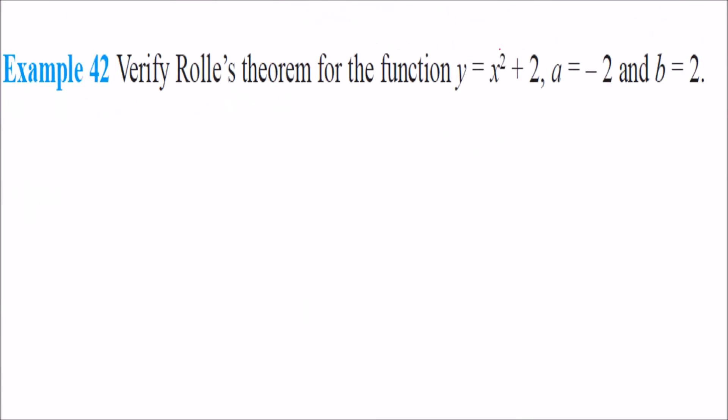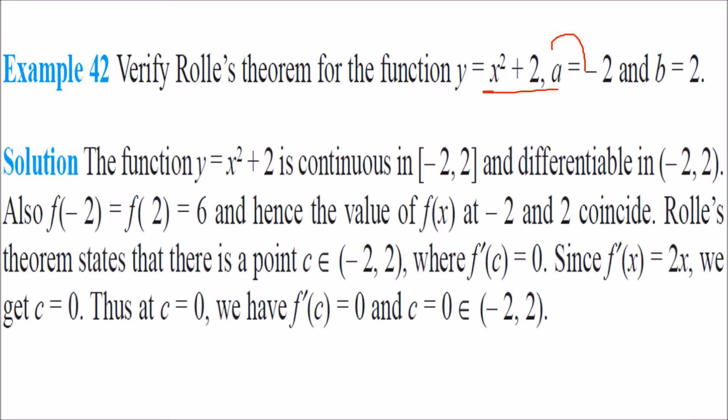Just verify the Rolle's theorem for this function. a is minus 2, b is equal to 2. See, the function is continuous at [-2, 2]. And differentiable also in this region. f(-2) is what? If you place minus 2, minus 2 or 2. In both the cases, you get 6. So since the f(x) or the value at minus 2 and 2, they are coinciding.